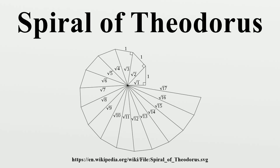It was first constructed by Theodorus of Cyrene. The construction of the spiral is started with an isosceles right triangle, with each leg having unit length.